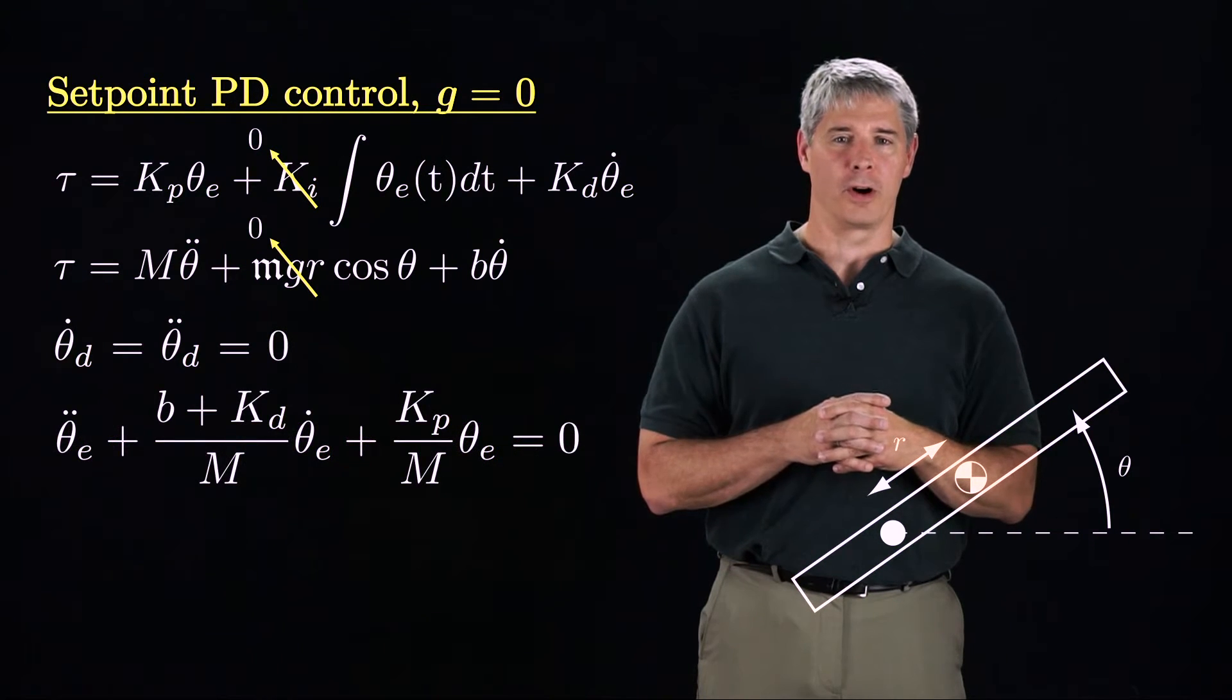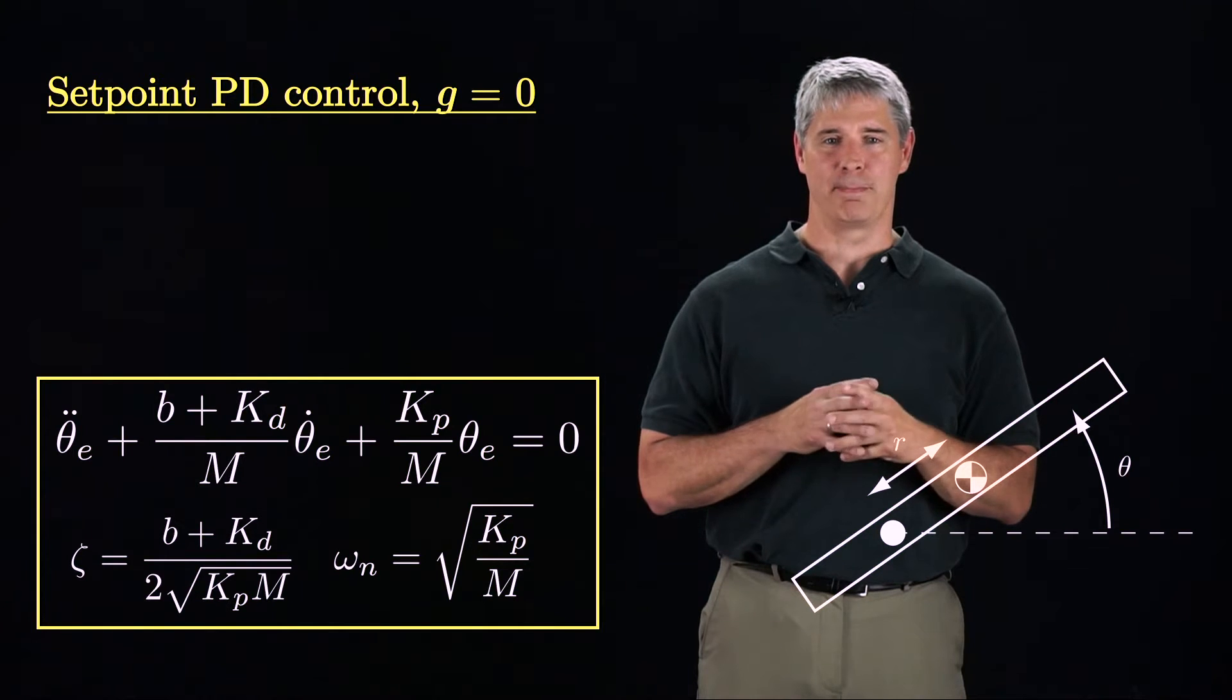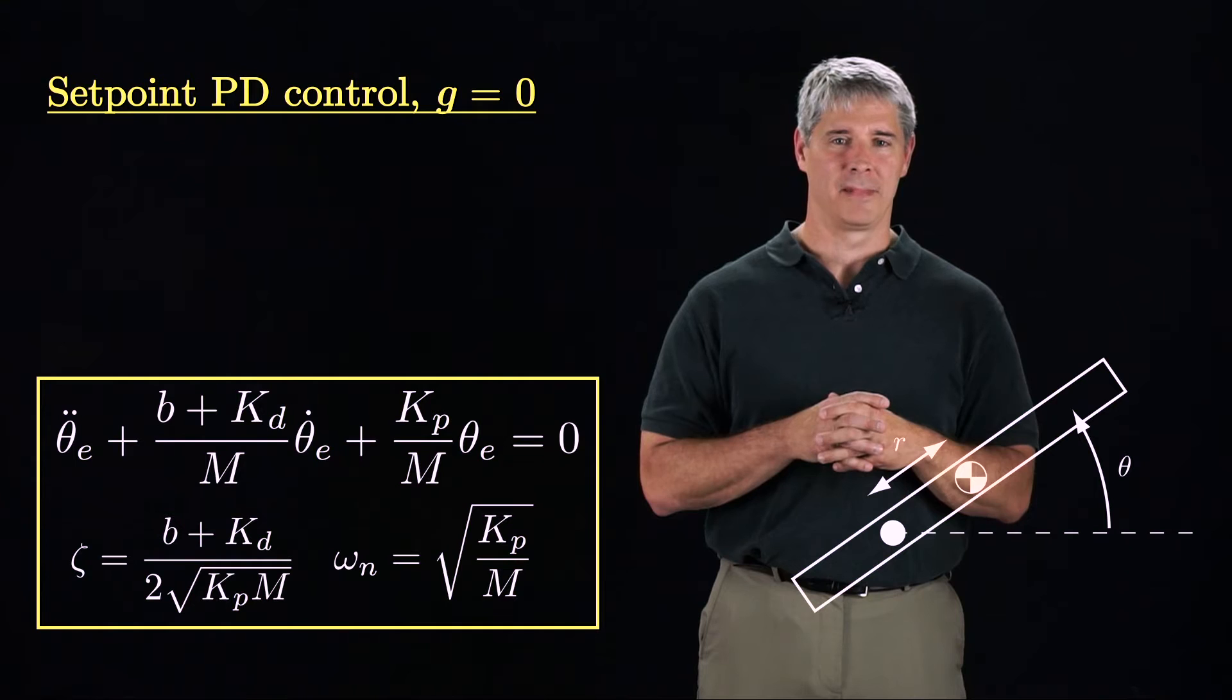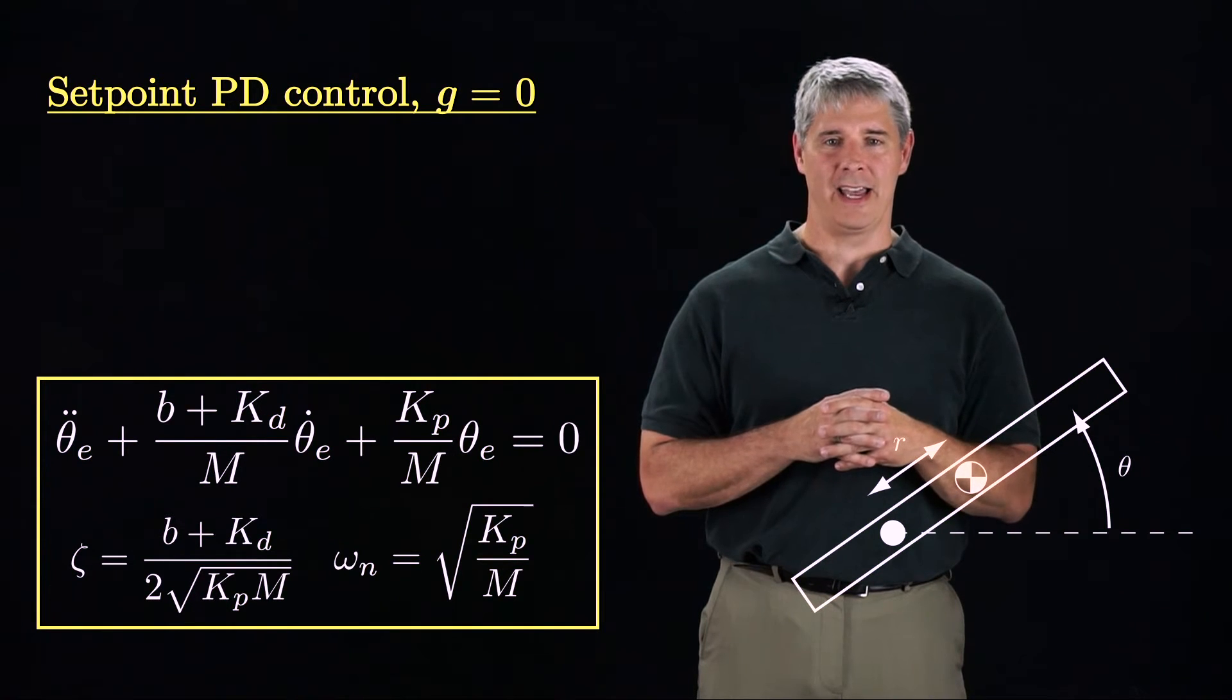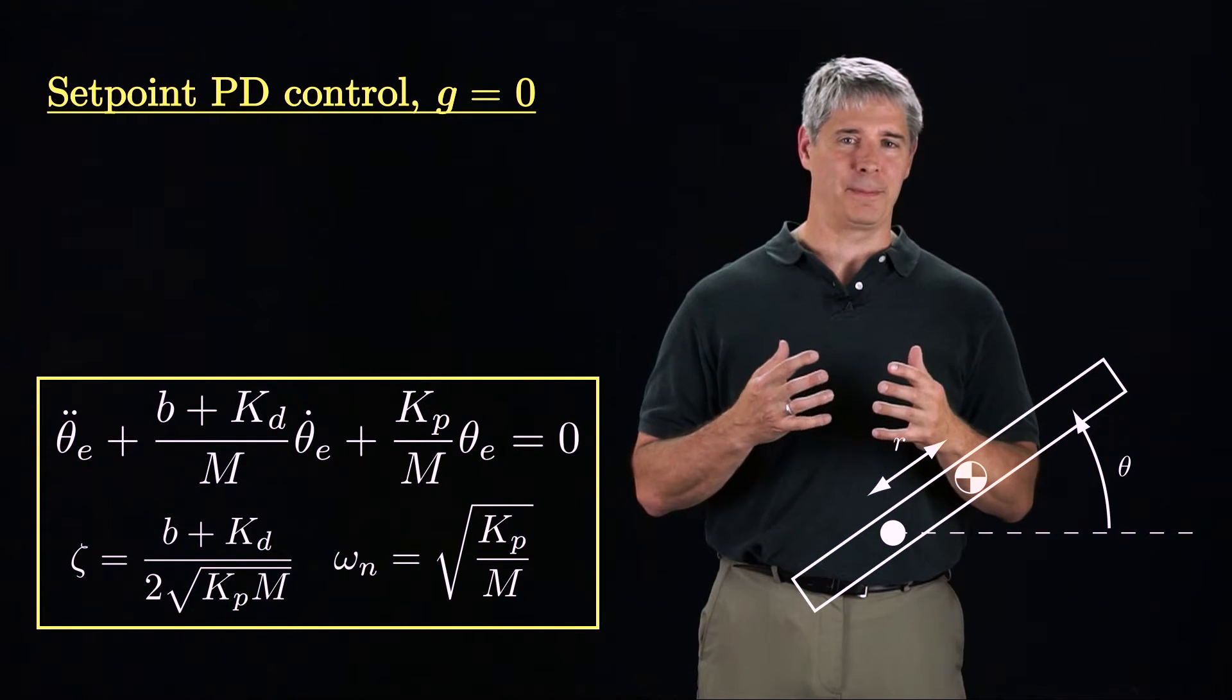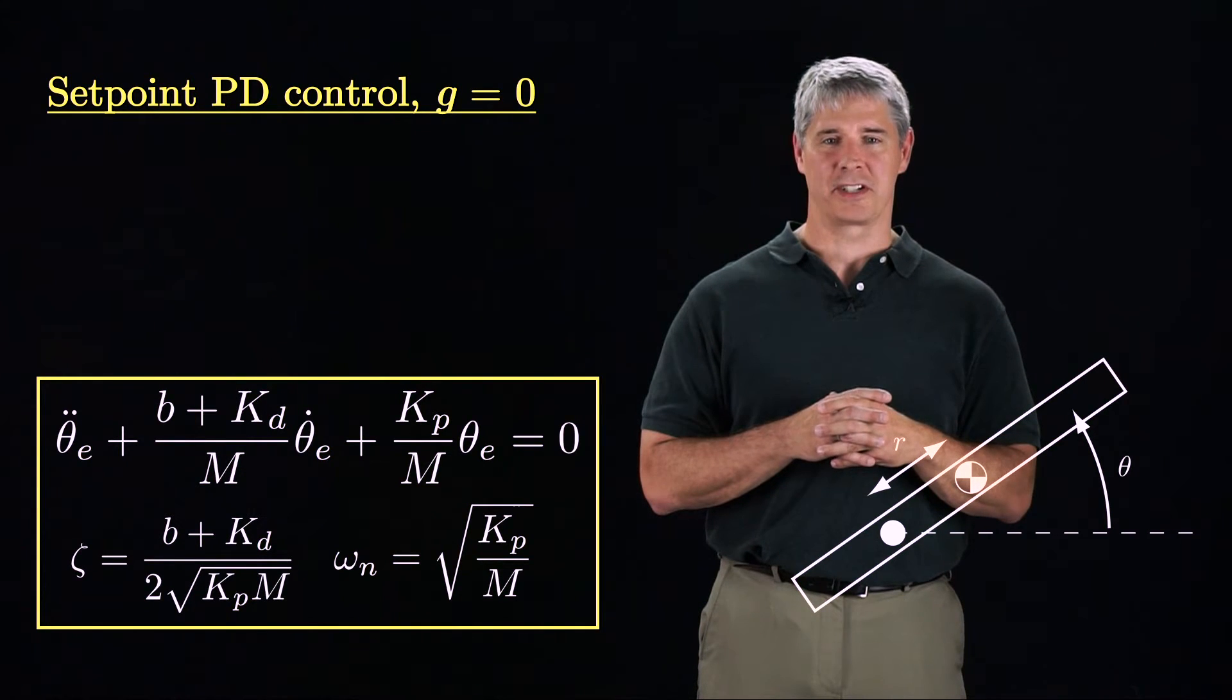we get the standard second-order form where the damping ratio zeta is b plus kd over two times the square root of kpm, and the natural frequency omega n is the square root of kp over m. Notice that the virtual damper kd plays the same role as the viscous friction b.